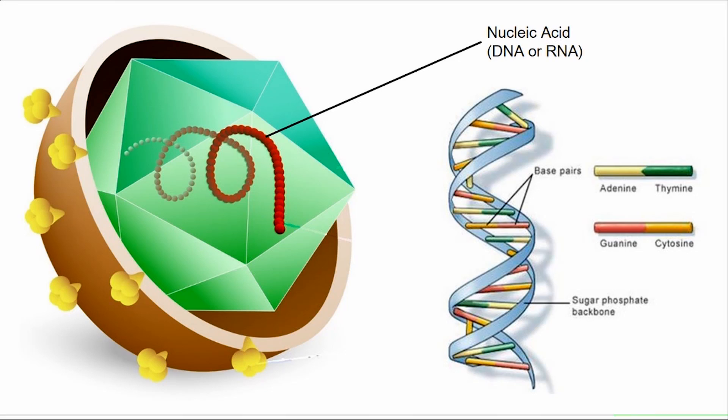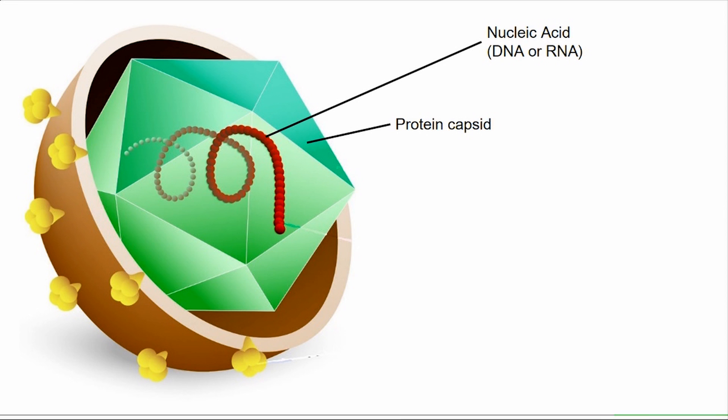DNA is transcribed into RNA, and messenger RNA is translated into proteins, which have a large number of functions in our bodies. The virus makes proteins that form a protein capsid that protects the genetic information. Some viruses have an outer lipid envelope, which they acquire from the host cell that they infect. Protein spikes are used by the virus to adhere to and enter cells.